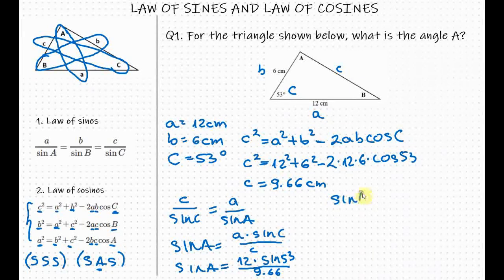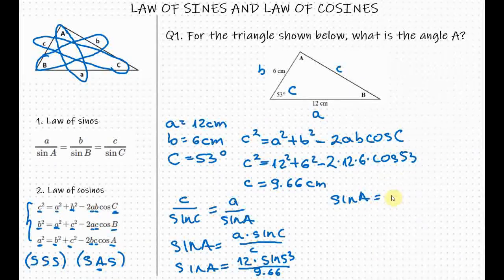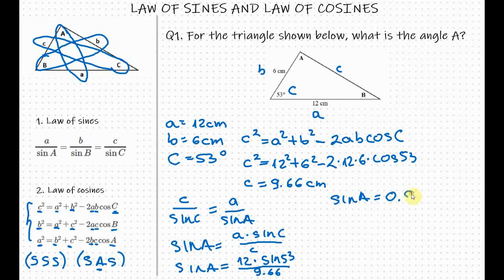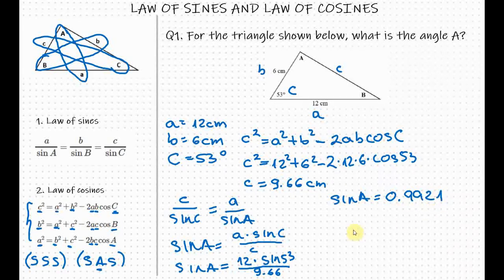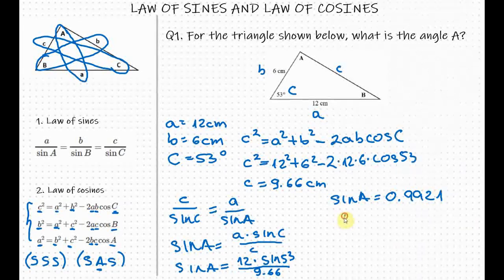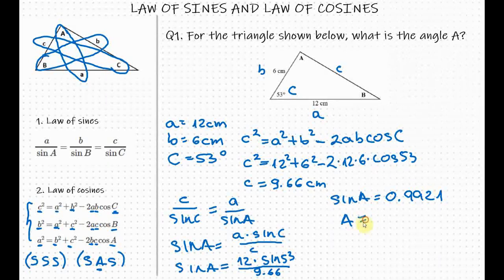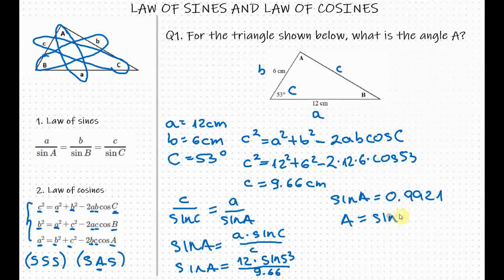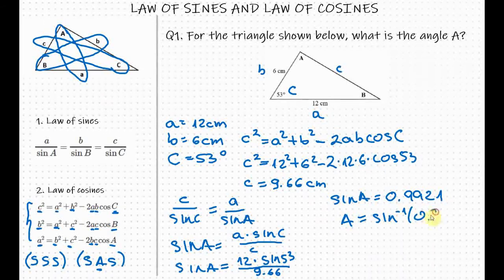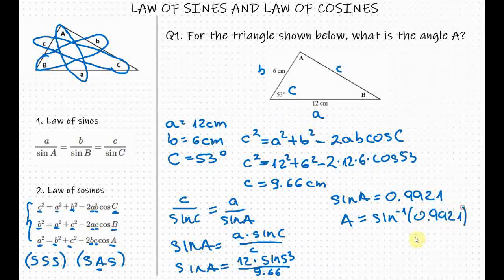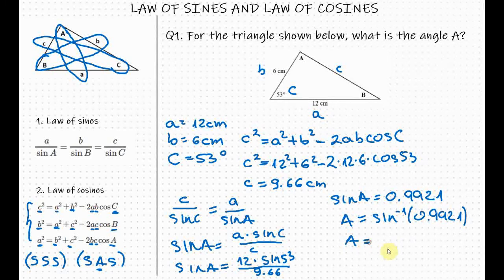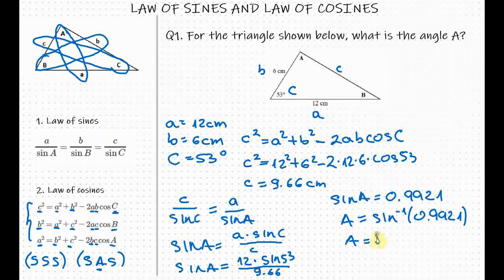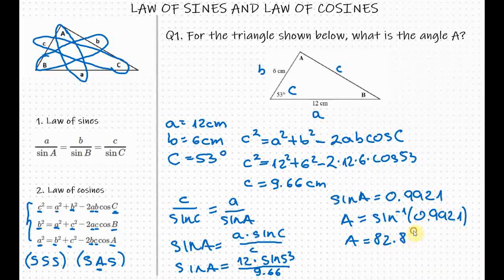So if I calculate this, I will get the value of sine A. So if I calculate this, I will get the value of sine A of 0.9921. So to get the angle A, we have the inverse of the sine A. So the angle A equals to 82.8 degrees.